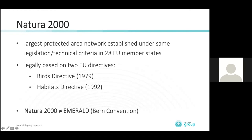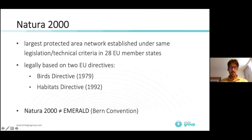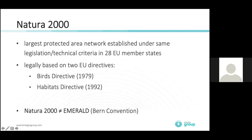Globally, Natura 2000 is the largest area network established under one legislation in all 27 or 28 member states of the European Union.